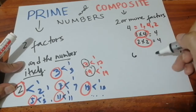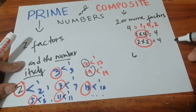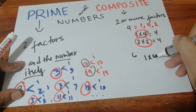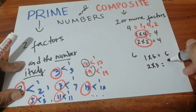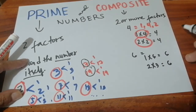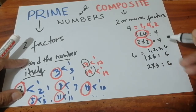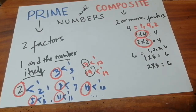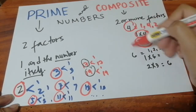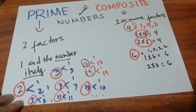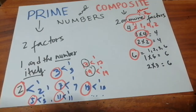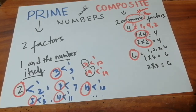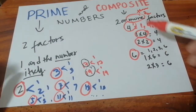Another is six. Six also has different factors. The factors of six are one times six and two times three. One times six is six and two times three is also six. So the factors of six are one, two, three, and six — six has four factors. That's why we say that four and six are composite numbers, because they have more than two factors.